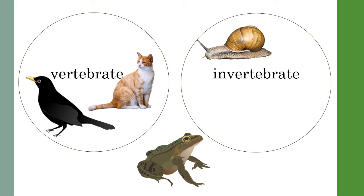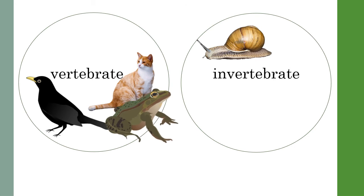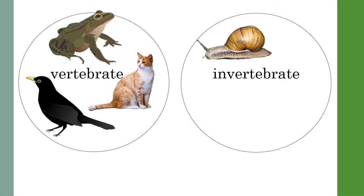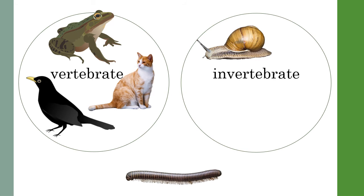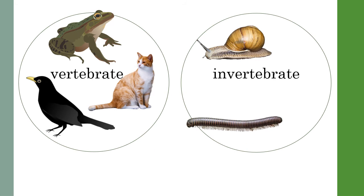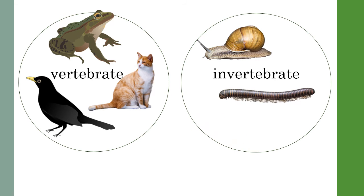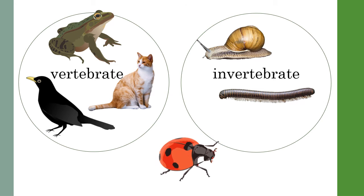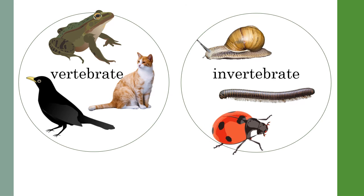Here we have the frog. A frog is a vertebrate. And here we have a millipede. A millipede does not have a backbone and belongs in the invertebrate group. Finally, the ladybird. A ladybird is an invertebrate animal.